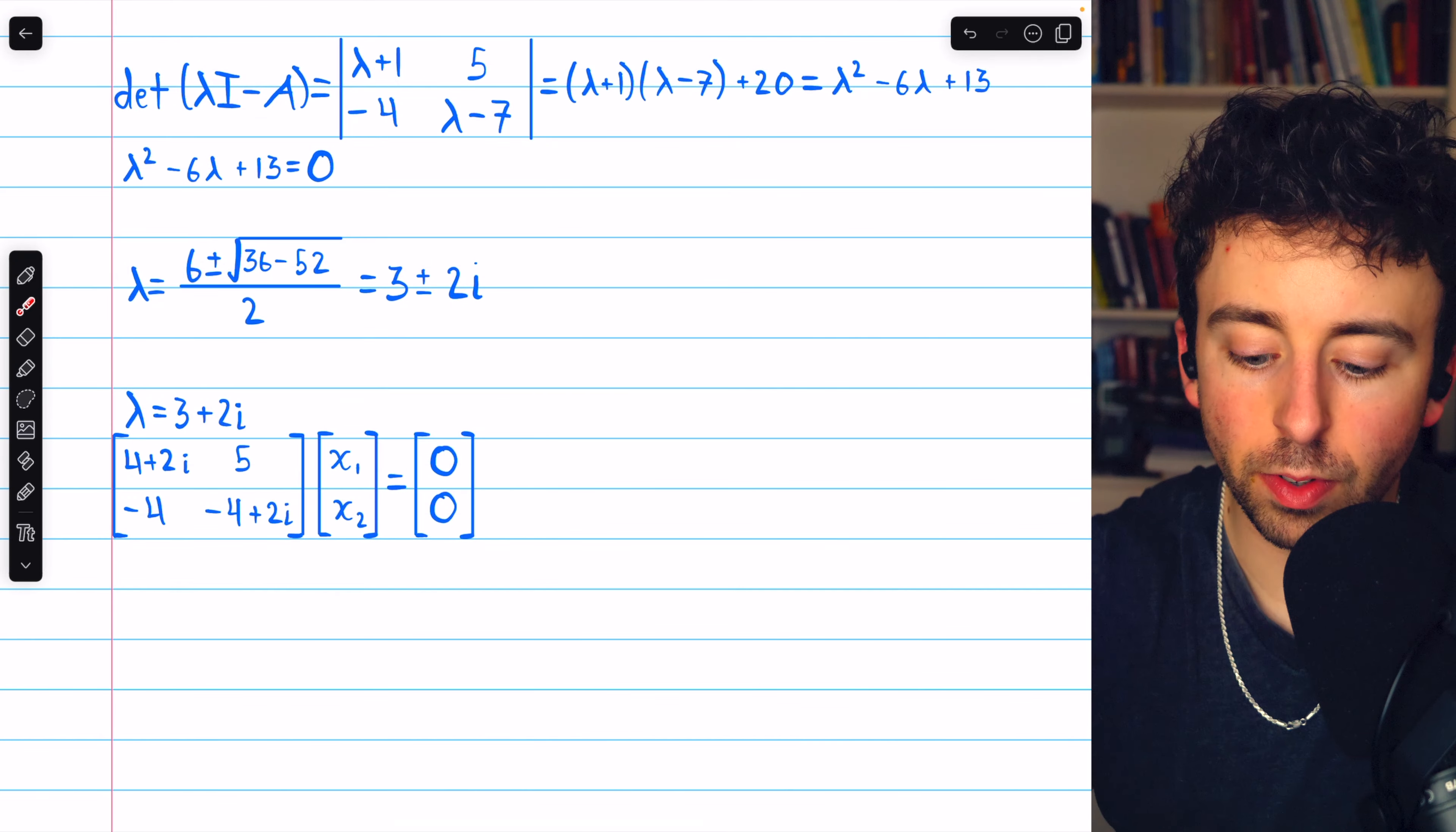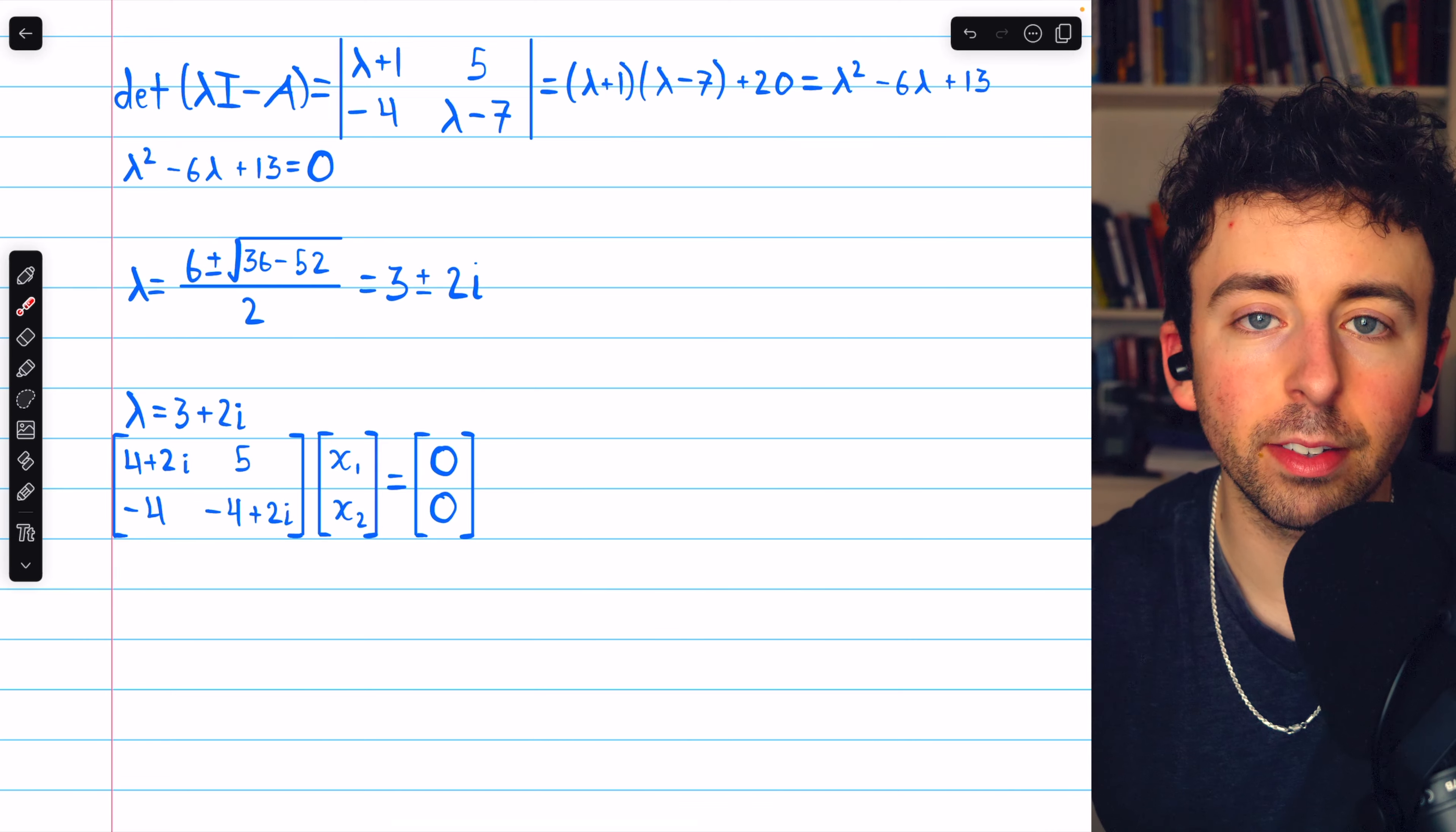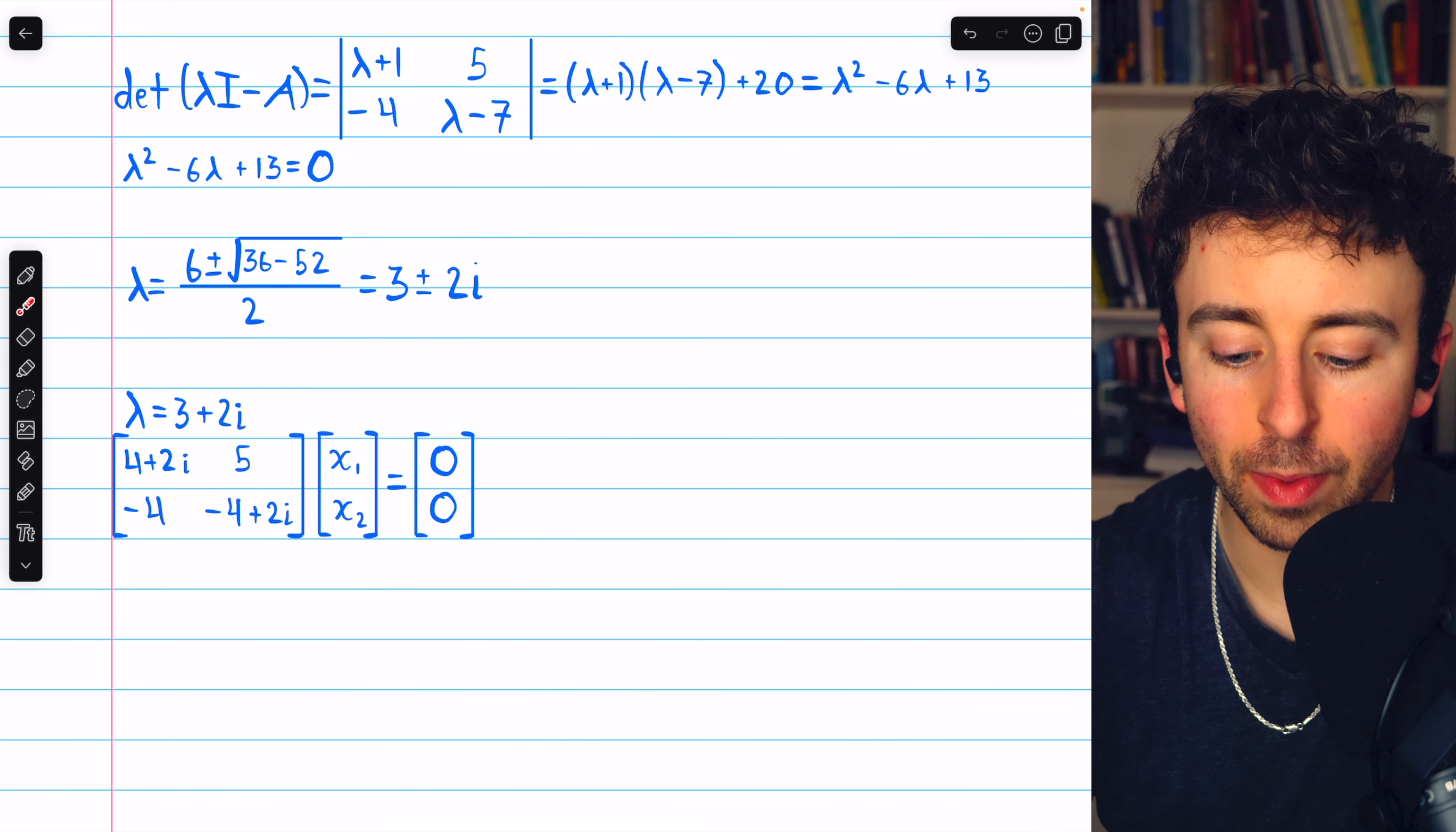We have two eigenvalues, 3 plus 2i and 3 minus 2i. We'll begin by finding a basis for the eigenspace corresponding to 3 plus 2i.